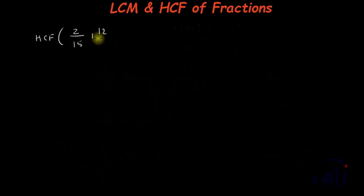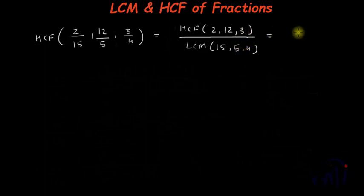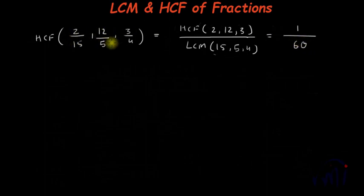Now let's find the HCF of 2/15, 12/5, and 3/4. This HCF will be a number which when it divides any of these fractions gives an integer as the quotient. The HCF of fractions equals the HCF of the numerators — 2, 12, and 3 — divided by the LCM of the denominators — 15, 5, and 4. Since 2 and 3 are co-prime, the HCF of 2, 12, and 3 is 1. The LCM of 15 and 5 is 15, and since 15 and 4 are co-prime, the LCM of 15 and 4 is 15 × 4 = 60. So the HCF of 2/15, 12/5, and 3/4 is 1/60.